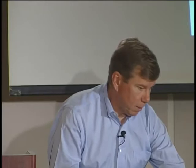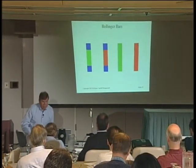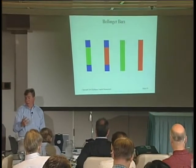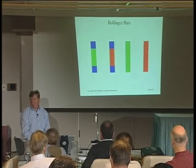I'm never willing to leave anything alone. Candlesticks are nice, but I like color coding. The traditional Japanese candlesticks are actually red and white, which is counterintuitive to Westerners who regard red as negative. So I created bars called Bollinger bars. The center of the bar is green if the close was higher than the open, red if the close is lower than the open, and the whiskers are always filled in blue.